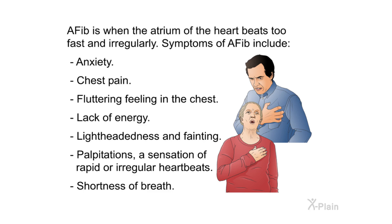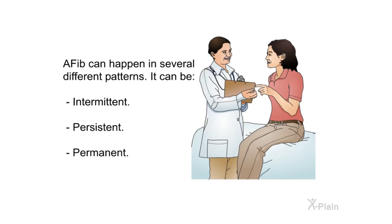Symptoms of AFib include anxiety, chest pain, a fluttering feeling in the chest, lack of energy, lightheadedness and fainting, palpitations — a sensation of rapid or irregular heartbeats — and shortness of breath. AFib can happen in several different patterns: it can be intermittent, persistent, or permanent.